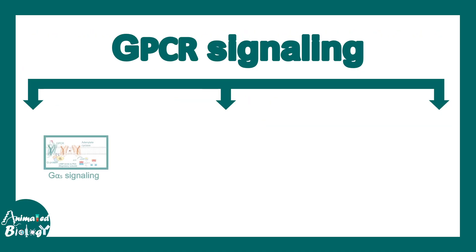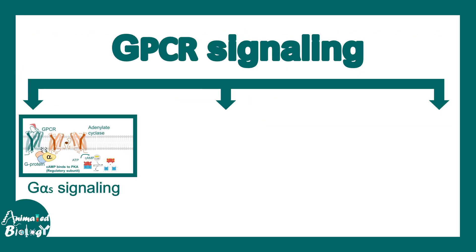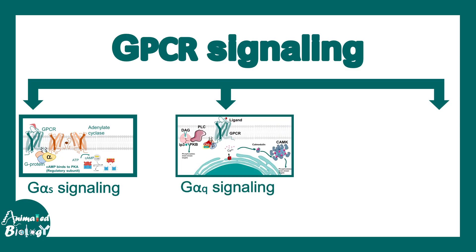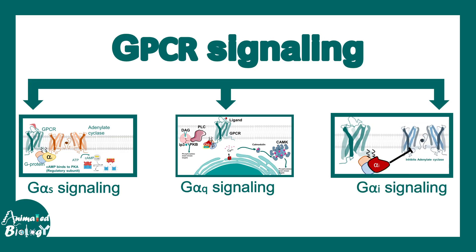GPCR signaling can be broadly divided into three types: GαS signaling, GαQ signaling, and GαI signaling. All of these are based on the alpha subunit composition of the trimeric G protein. We are going to talk about all of them one by one.